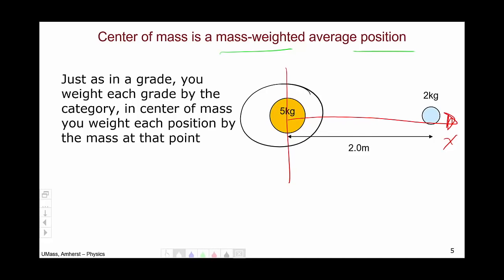I start with the 5 kilogram object. So the x location of the center of mass, I take my value, which is 0 meters, because I'm interested in finding the average position. And then I multiply it by the weight, which in this case is 5 kilograms, divided by my total, which is 5 kilograms plus 2 kilograms.